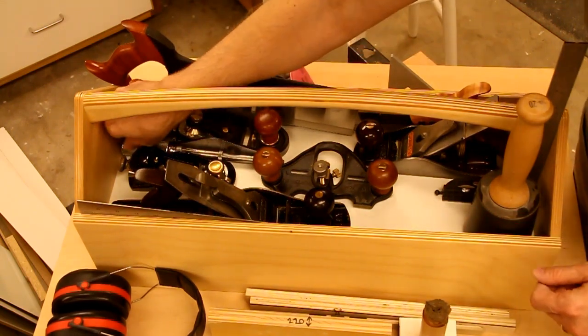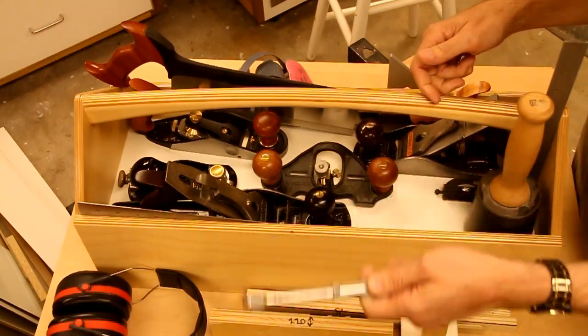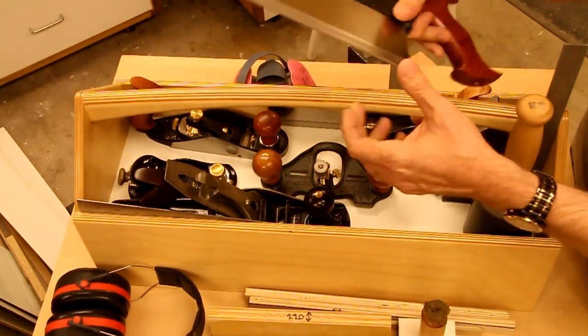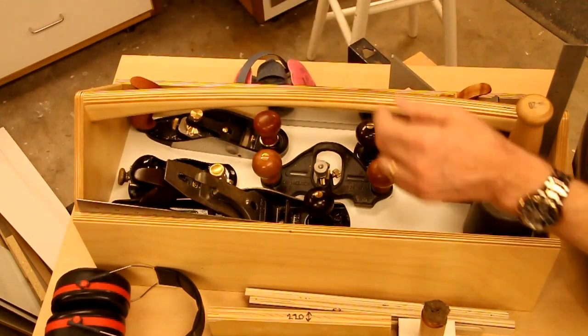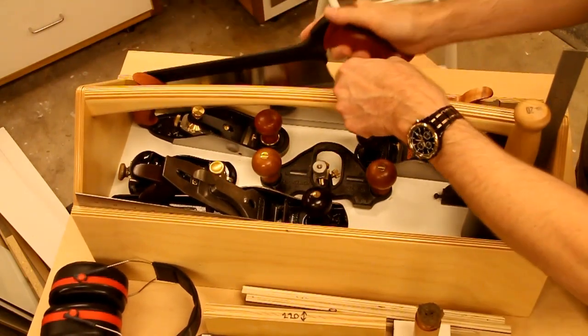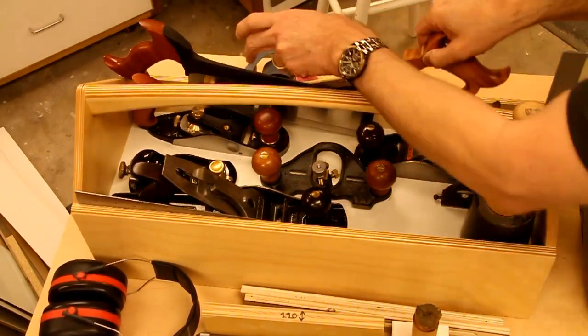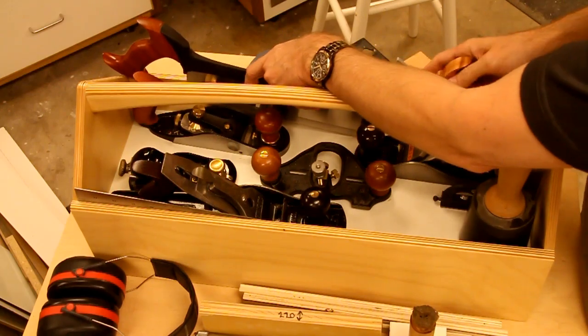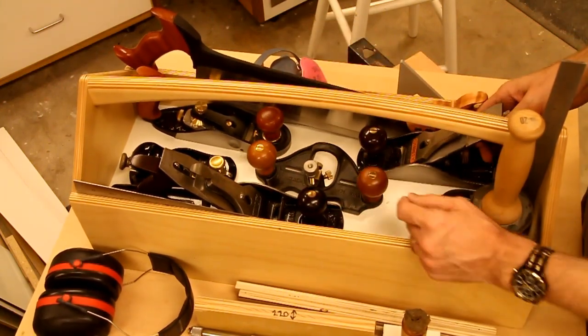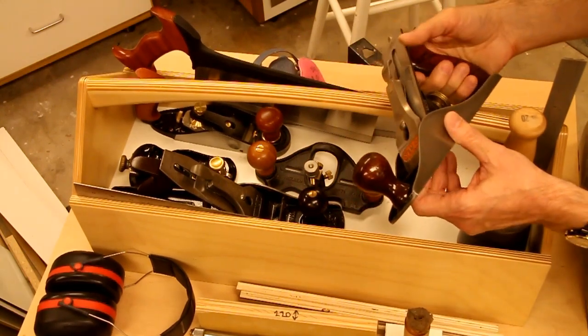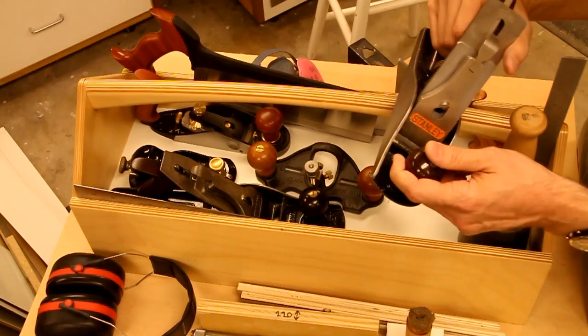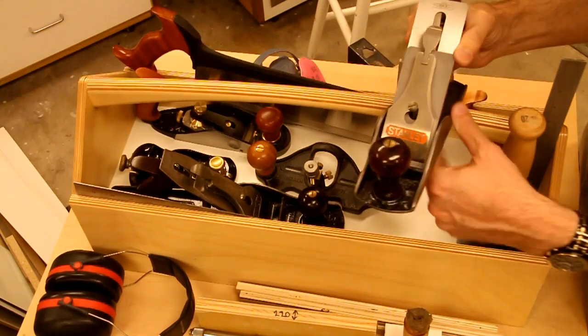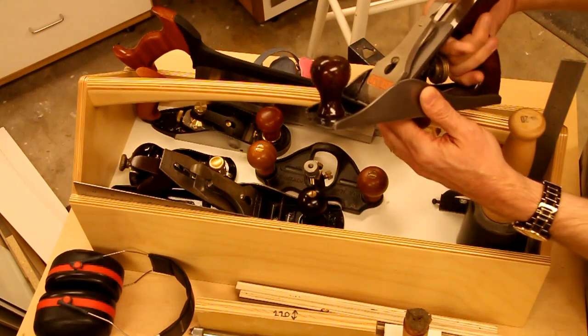So I have a Stanley Yankee push drill. I have two saws. General purpose. This is a crosscut Veritas saw. And a Lee Nielsen dovetail saw. For planes, I carry a number 4 smoothing plane. Though this is more kind of general purpose. I inherited this from my father. So it has special meaning to me. But I did replace the blade with a Hock blade and chip breaker.